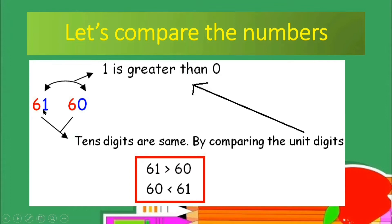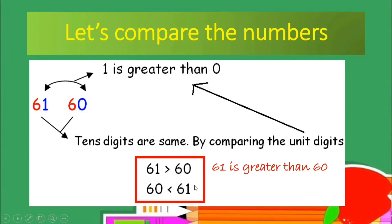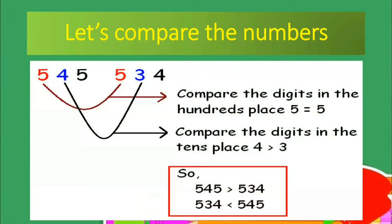Therefore, 61 is greater than 60. We are going to use the greater than symbol since 61 is the first number written. Can we switch? Yes, we can switch the numbers, but we will change the symbol as well. If we write 60 first, we use smaller than, because 60 is really smaller than 61.